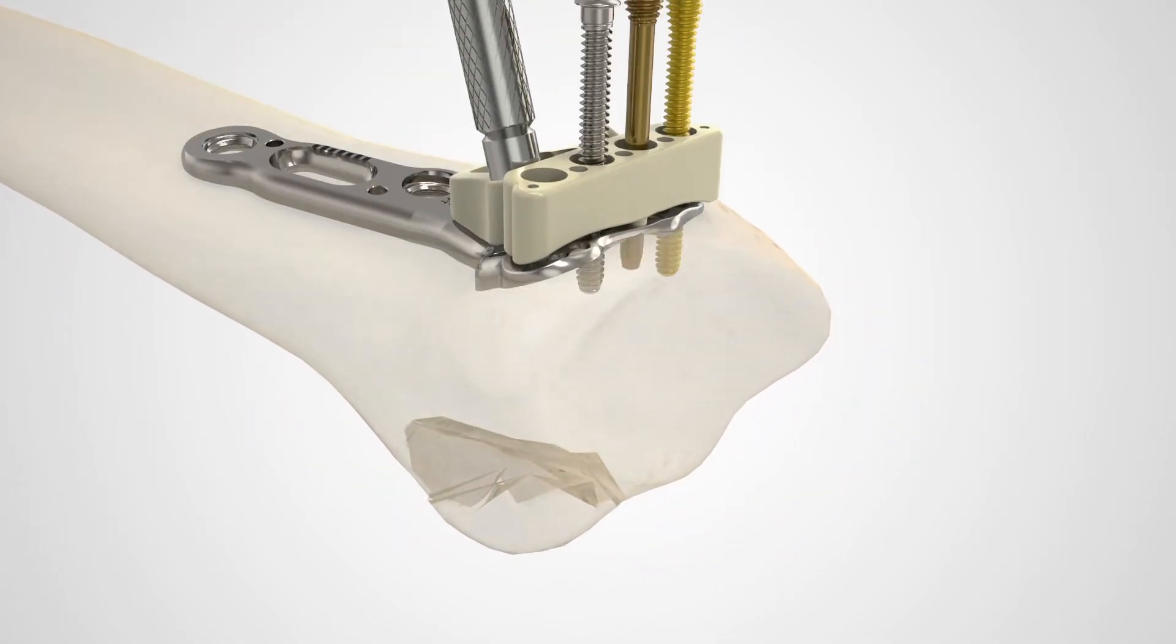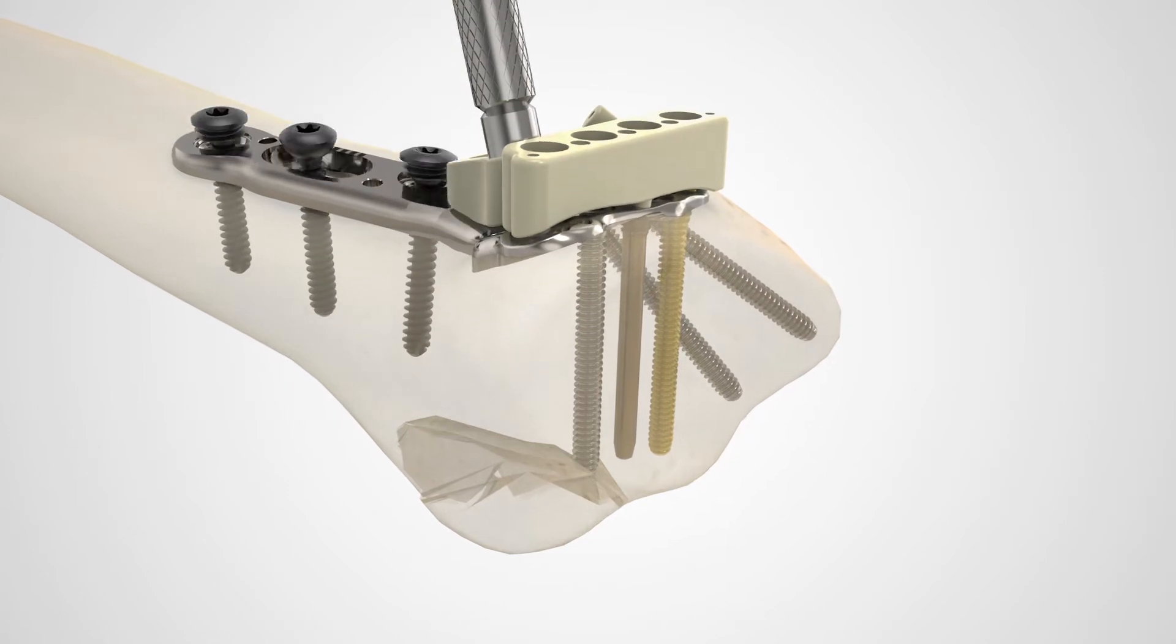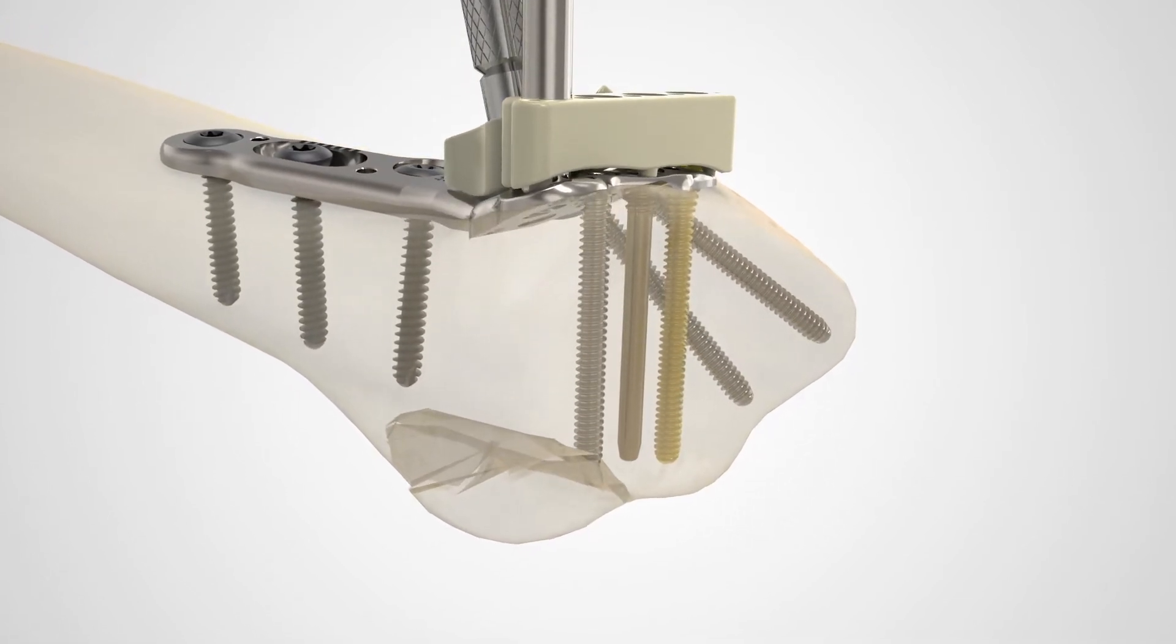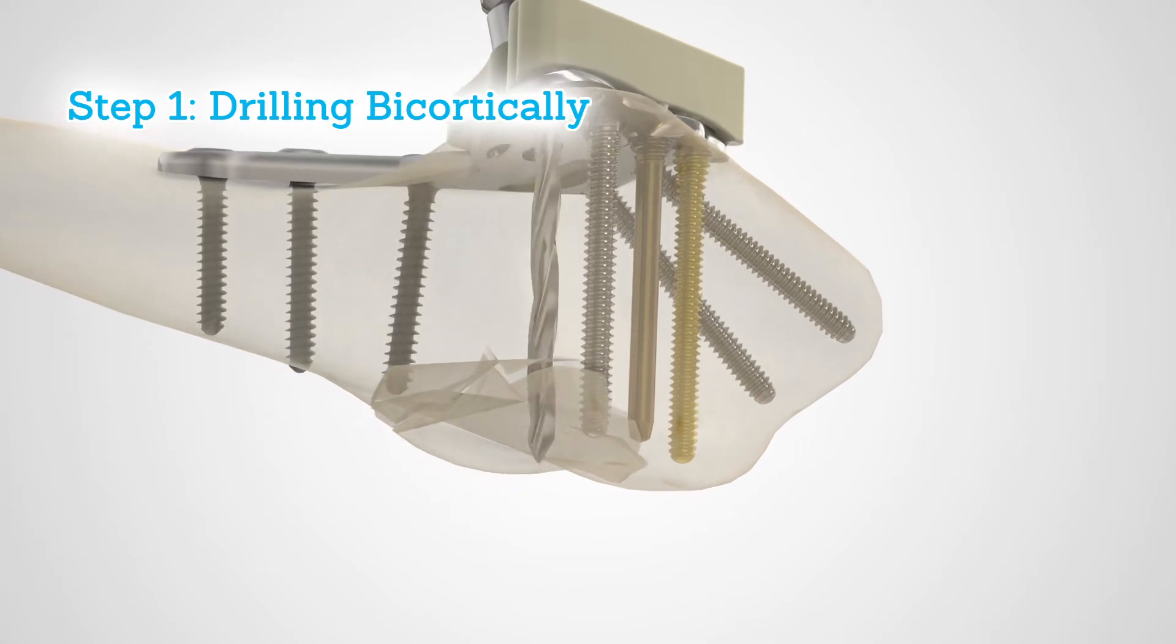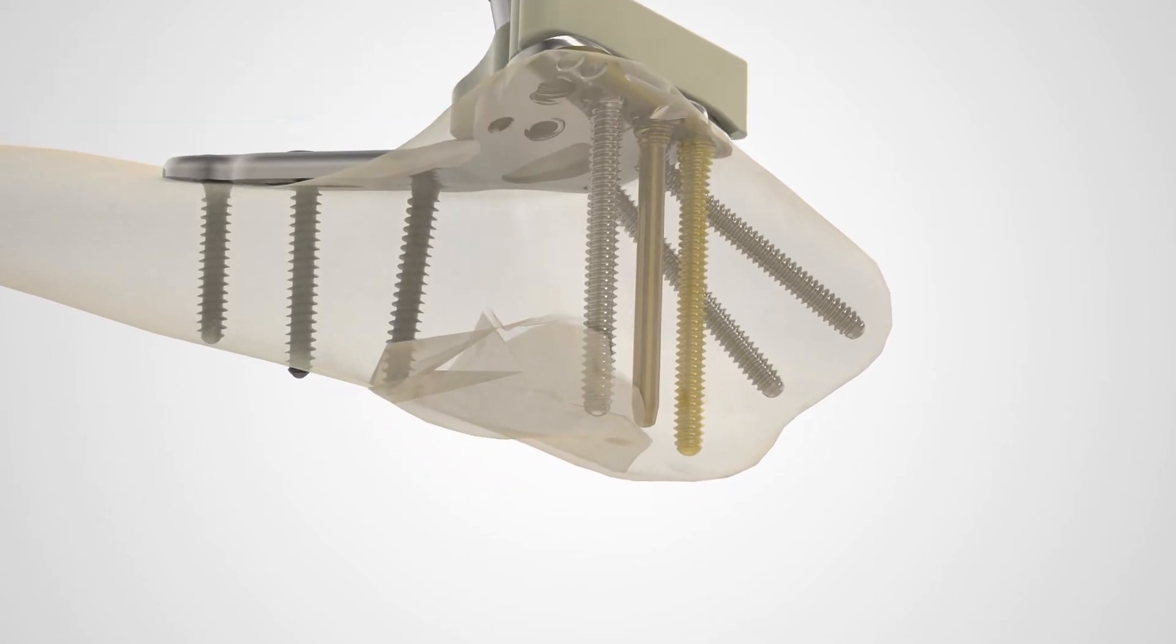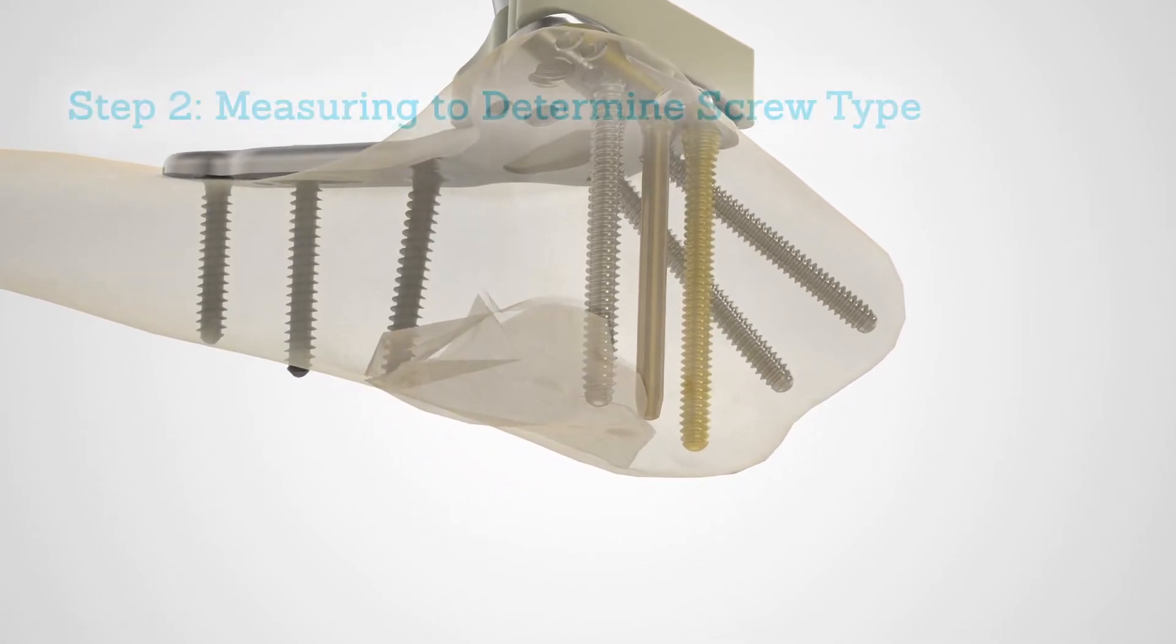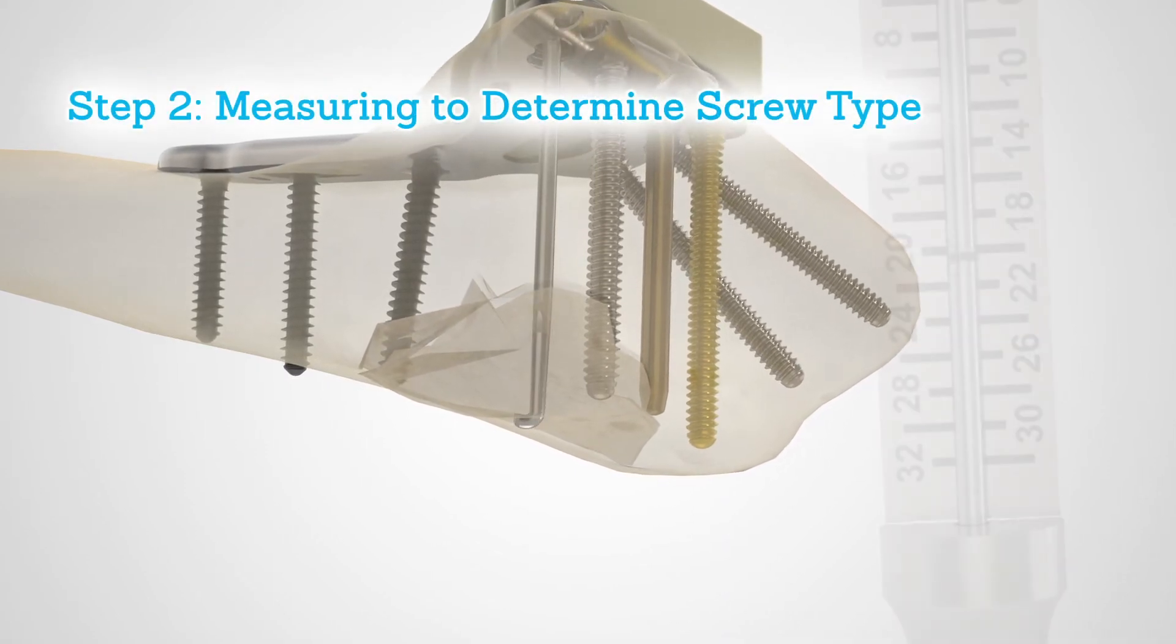After appropriate plate placement and initial screw insertion, drill bicortically with the 2.0 quick-release drill through the 2.0 drop-in drill guide or locking drill guide. Measure the screw length using the distal radius probe.